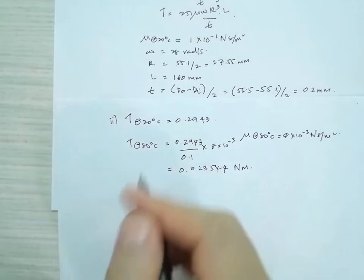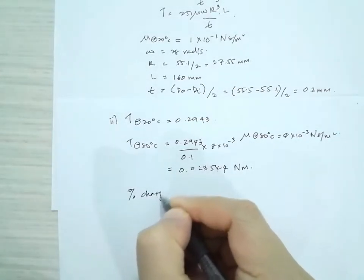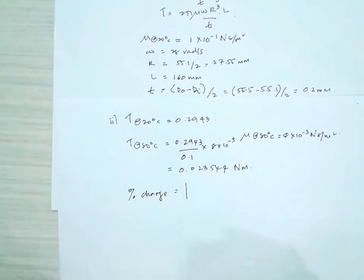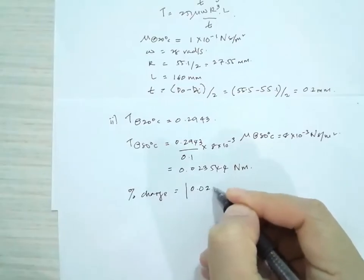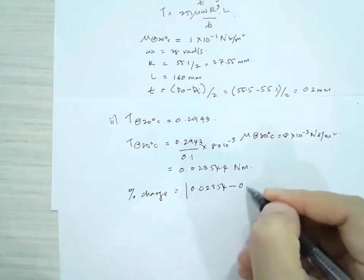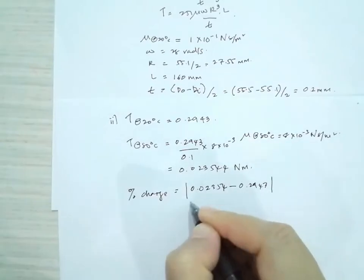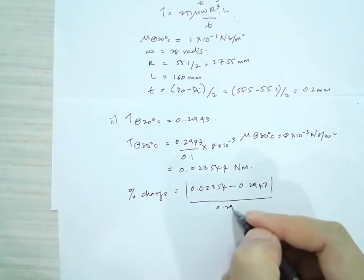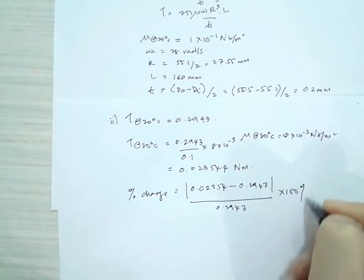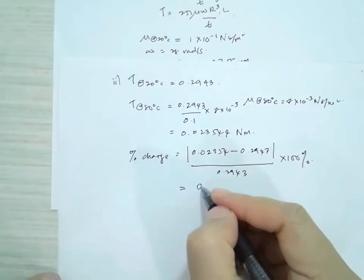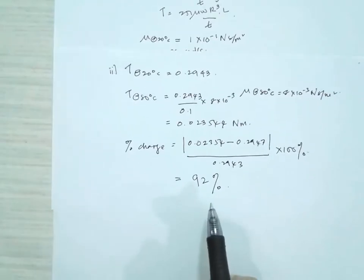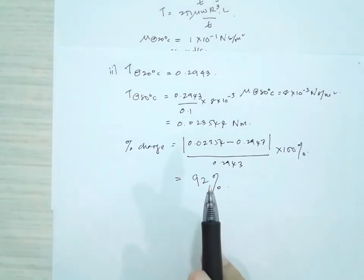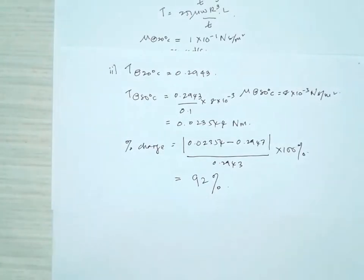The percentage change in torque = (0.02354 − 0.2943) / 0.2943 × 100% = −92%. So the torque decreases by 92% when the temperature increases to 80°C.